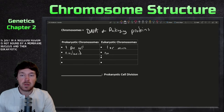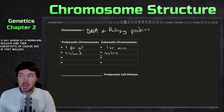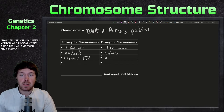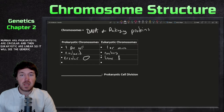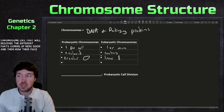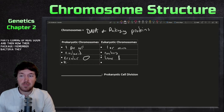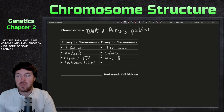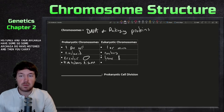Where chromosomes are located: prokaryotic chromosomes are in the nucleoid region — not bound by a membrane nucleus. Eukaryotic chromosomes are of course in the nucleus. The shape of prokaryotic chromosomes is circular, and eukaryotic chromosomes are linear. As for packaging, bacteria have no histones, archaea have some, and eukaryotic chromosomes do have histones present.